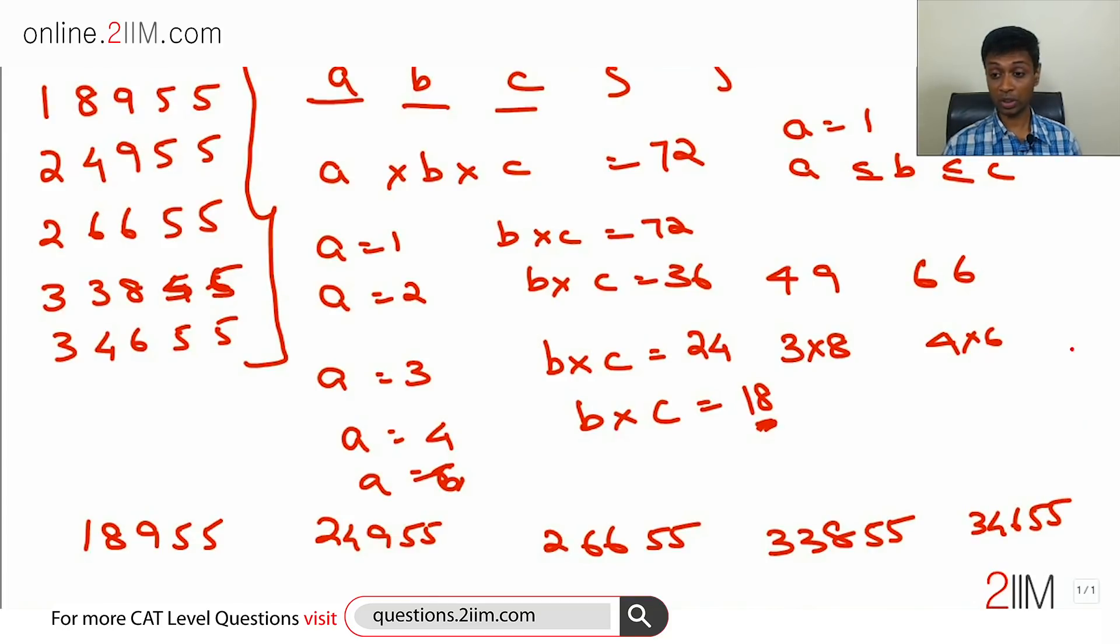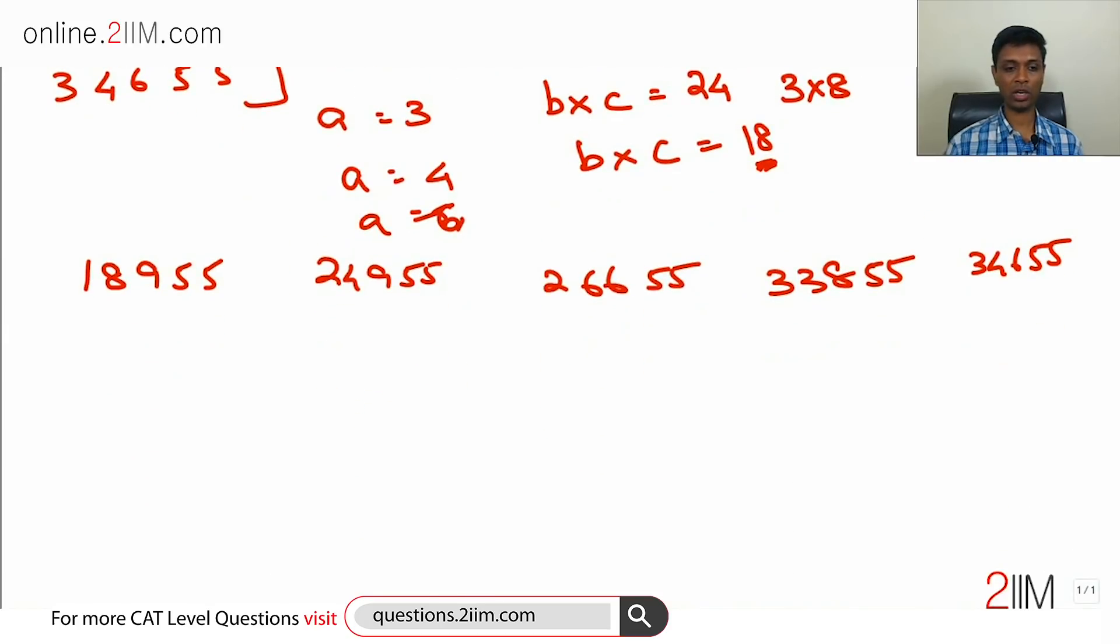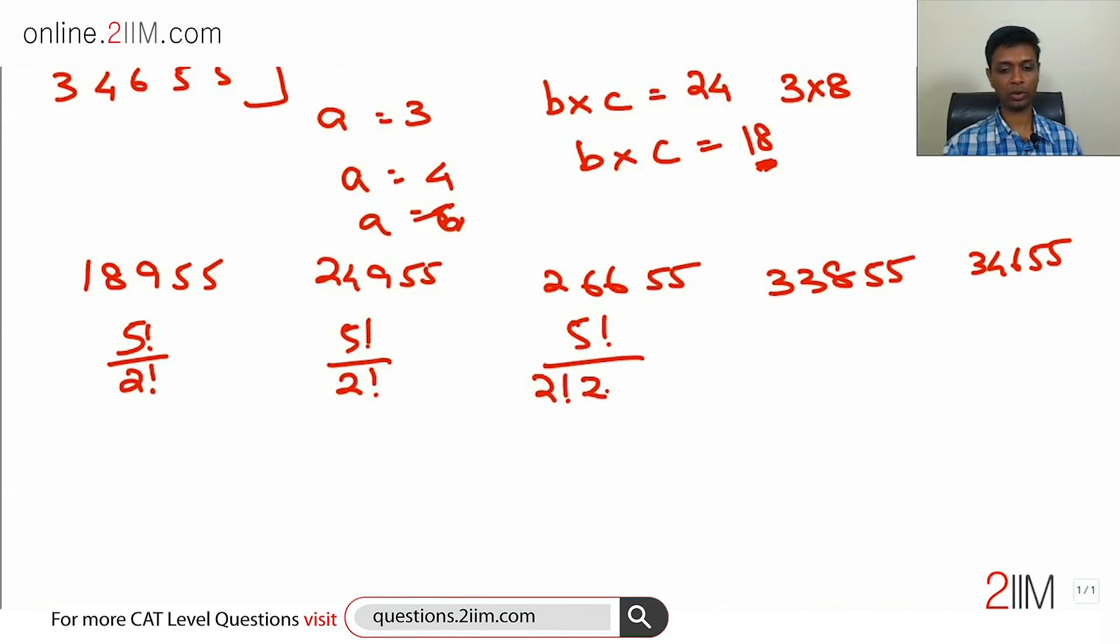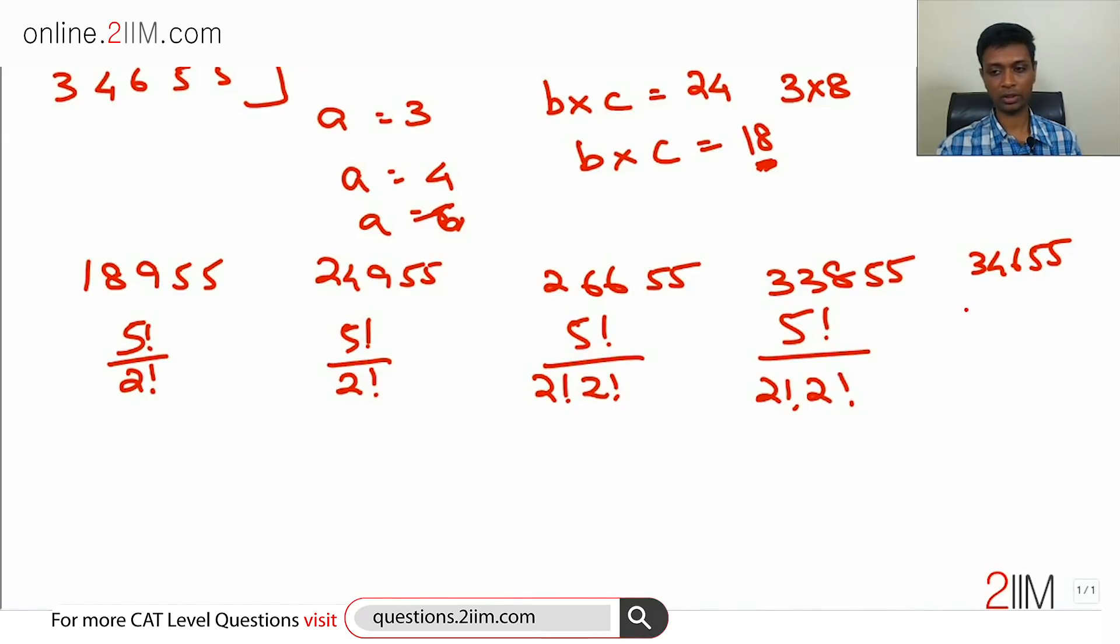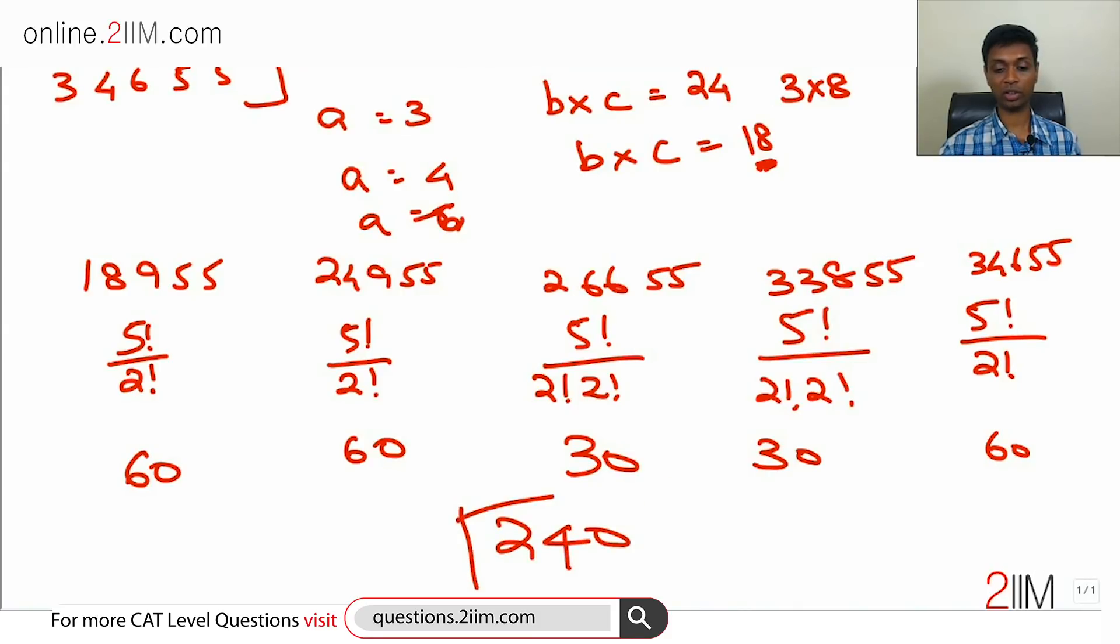Let's count the number of numbers. 1, 8, 9, 5, 5: in how many ways can this be rearranged? 5 factorial by 2 factorial. This again 5 factorial by 2 factorial. This one 5 factorial by 2 factorial times 2 factorial. This one again 5 factorial by 2 factorial times 2 factorial. 5 factorial is 120, 120 by 2 is 60, 60, 60 by further 2 is 30, 30. So 60 plus 60 is 120, plus 60 is 180, 210, 240. 240 such numbers are possible.